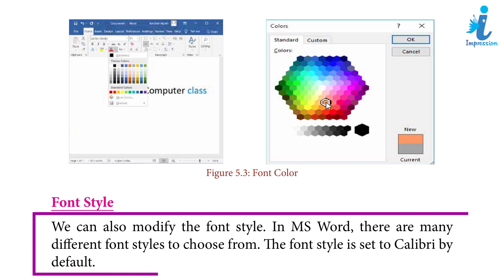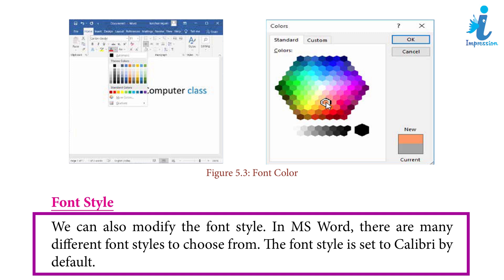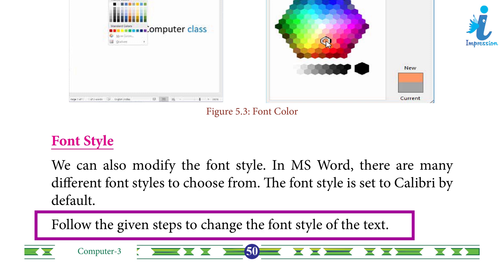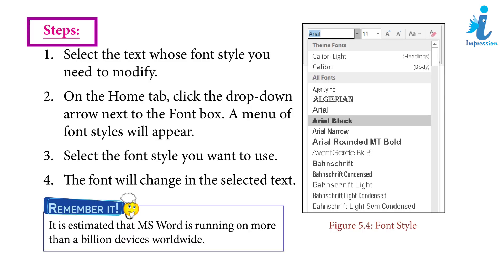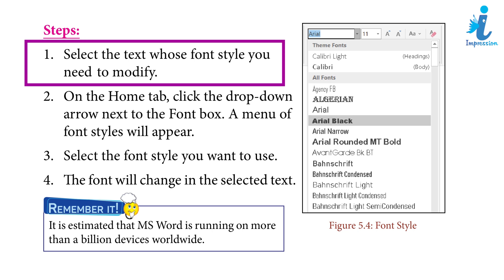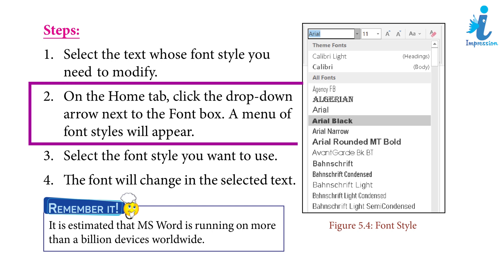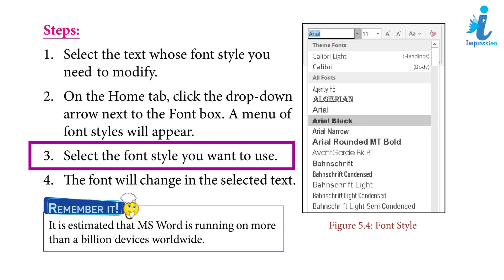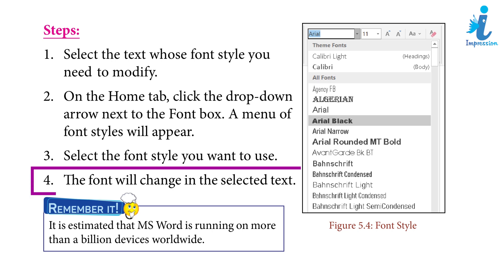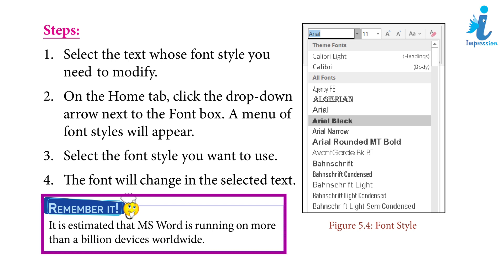Font Style: We can also modify the font style. In MS Word, there are many different font styles to choose from. The font style is set to Calibri by default. Steps: 1. Select the text whose font style you need to modify. 2. On the Home tab, click the drop-down arrow next to the font box — a menu of font styles will appear. 3. Select the font style you want to use. 4. The font will change in the selected text. Remember: It is estimated that MS Word is running on more than a billion devices worldwide.